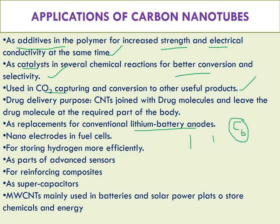Similarly, in fuel cells — where the anode and cathode are made of carbon rods — hydrogen gas is passed over the anode and oxygen over the cathode. If you replace or coat the carbon rods with carbon nanotubes, you can achieve more storage of hydrogen and oxidizing agent, producing more electricity with higher efficiency. Carbon nanotubes are also used in advanced sensors, composite materials, and supercapacitors.